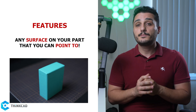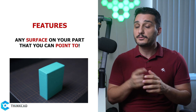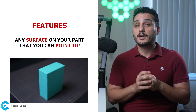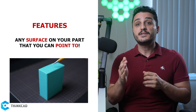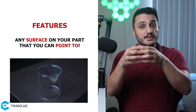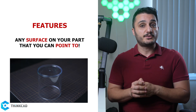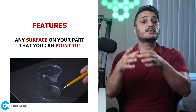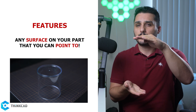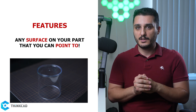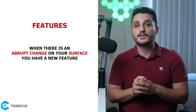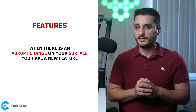A feature in simple terms is any surface on your part you can point to. For example, a simple box has six features — every side of it is considered a single feature. A cylinder has three features: the entire cylindrical side surface is one feature, and the top and bottom caps give you two more. Basically, whenever you have an abrupt change in your geometry, you're probably dealing with a new surface.